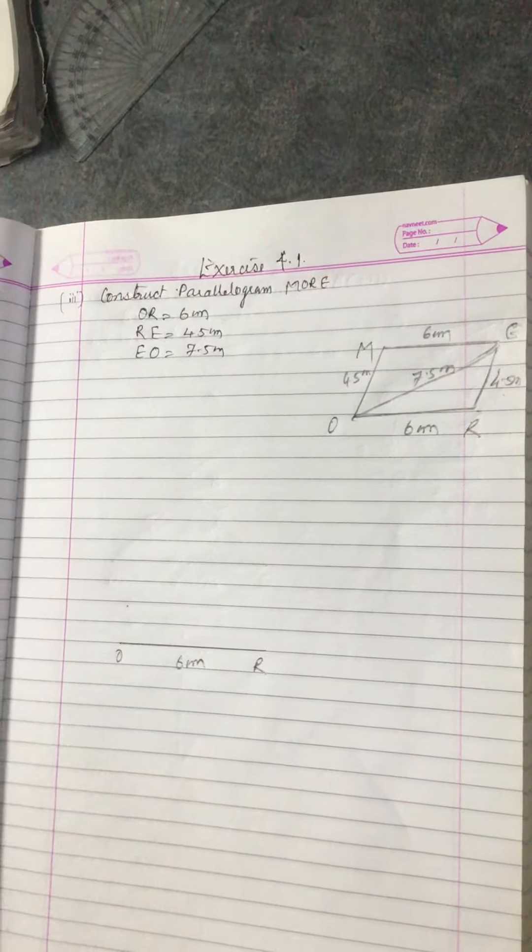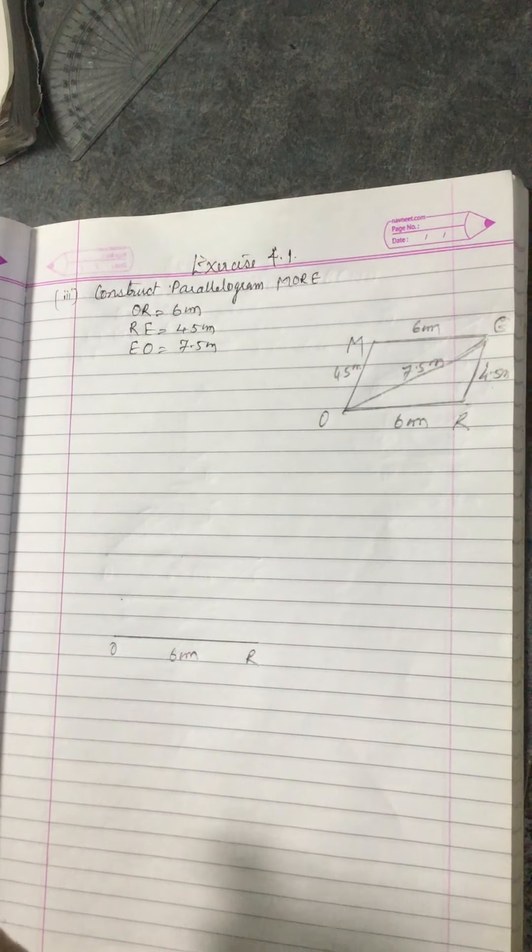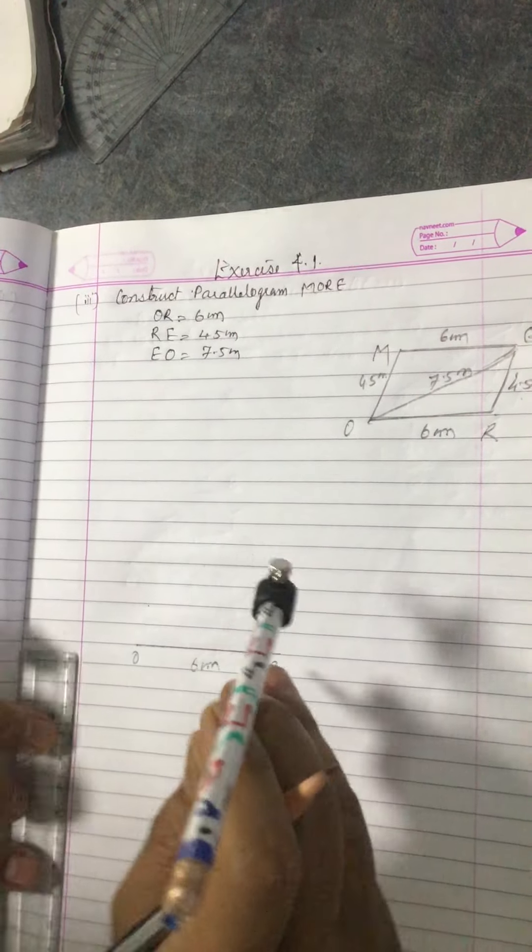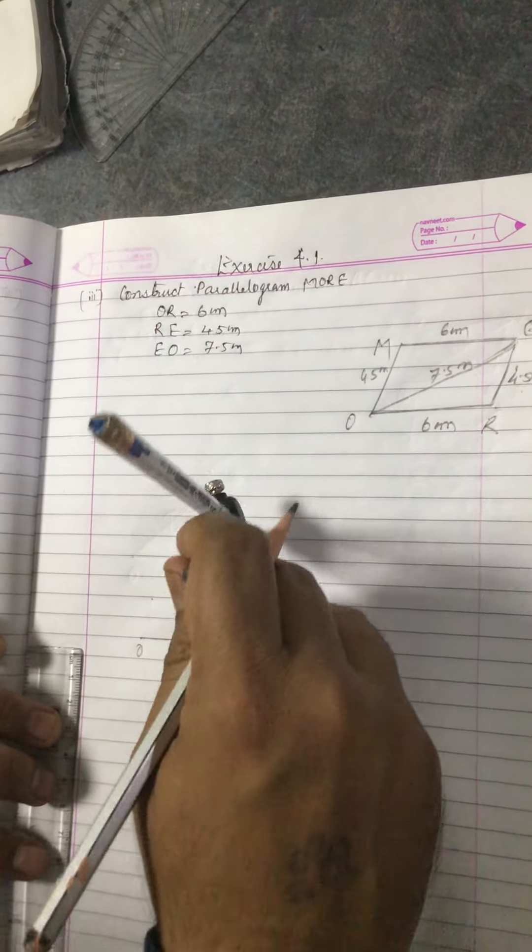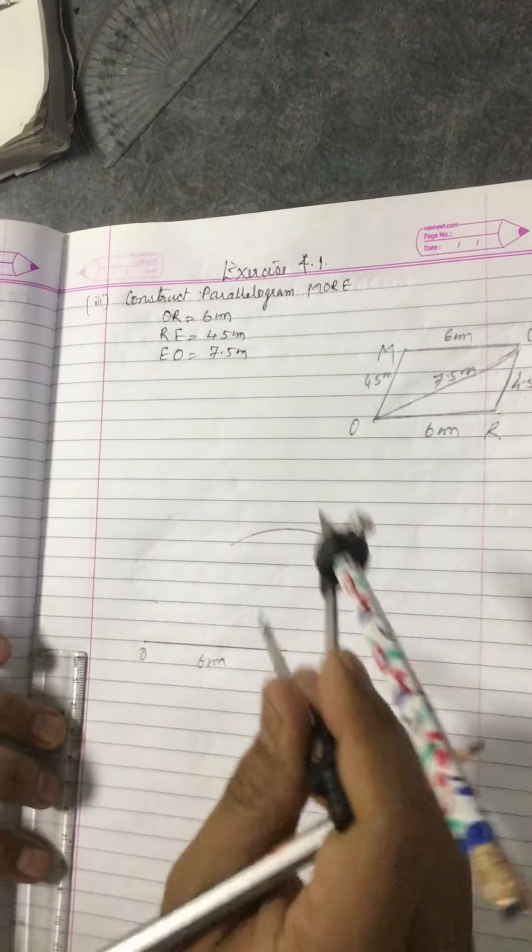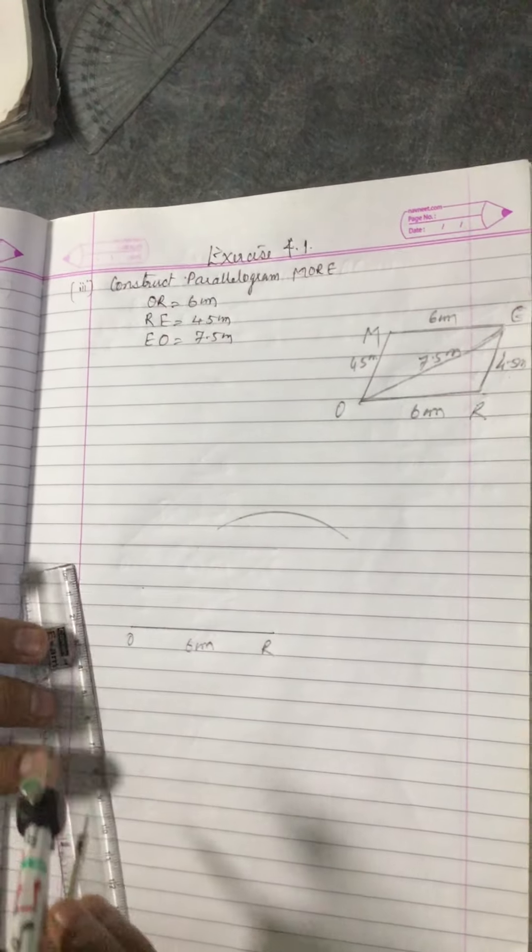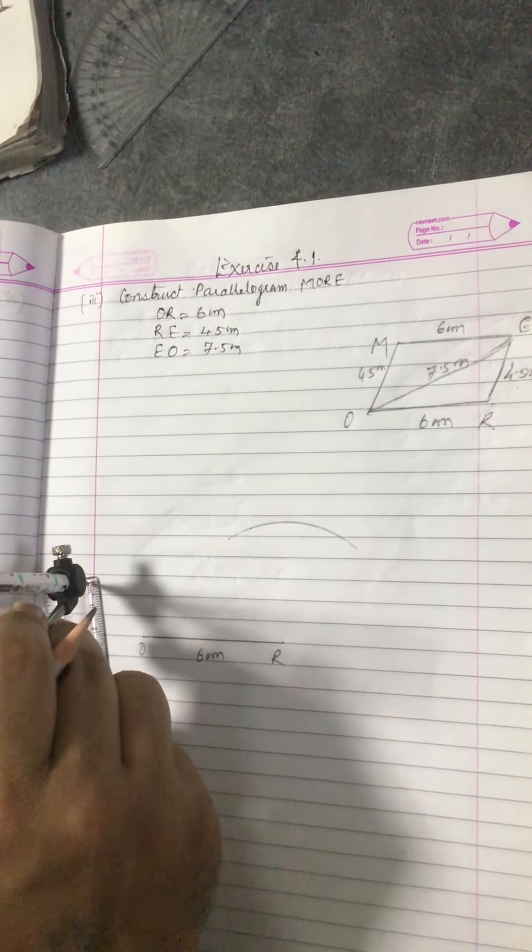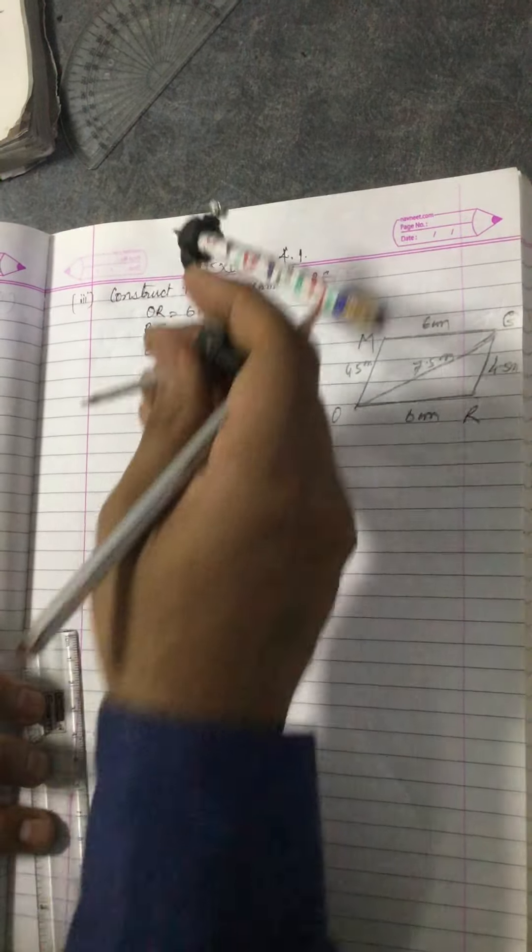With R as center and radius 4.5, draw an arc. Now with O as center and radius 7.5, draw an arc which will intersect the previous arc at E. So we got the E point here.